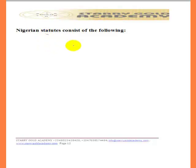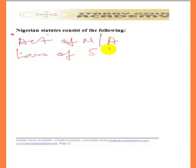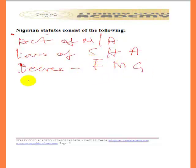Let us look at examples of Nigerian statutes. We have Acts — these are Acts of the National Assembly. We have Laws — these are Laws of the State House of Assembly. We have Decrees — these are laws made by the federal military government. And we have Edicts — these are laws made by the state military government. These are examples of statutes we have in Nigeria, and we are still making use of them today.